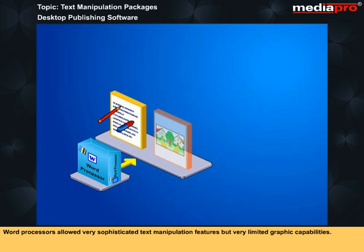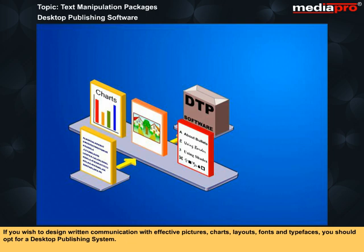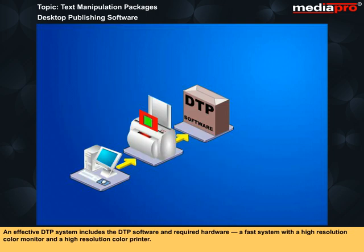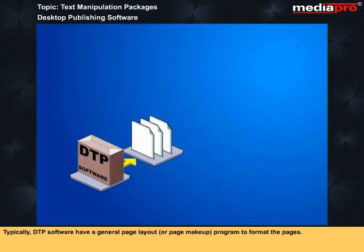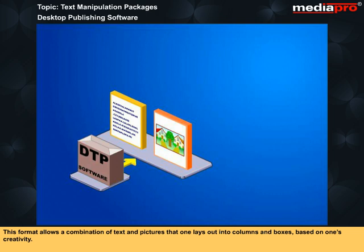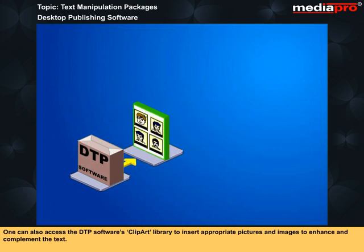If you wish to design written communication with effective pictures, charts, layouts, fonts, and typefaces, you should opt for a desktop publishing system. An effective DTP system includes the DTP software and required hardware — a fast system with a high-resolution color monitor and high-resolution color printer. Typically, DTP software has a general page layout or page makeup program to format the pages. This format allows a combination of text and pictures that one lays out into columns and boxes based on one's creativity. One can also access the DTP software's clipart library to insert appropriate pictures and images to enhance and complement the text.